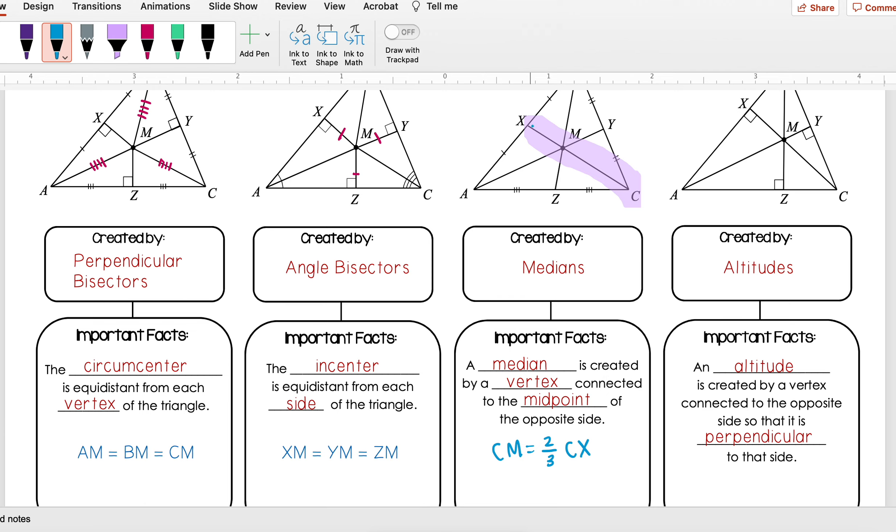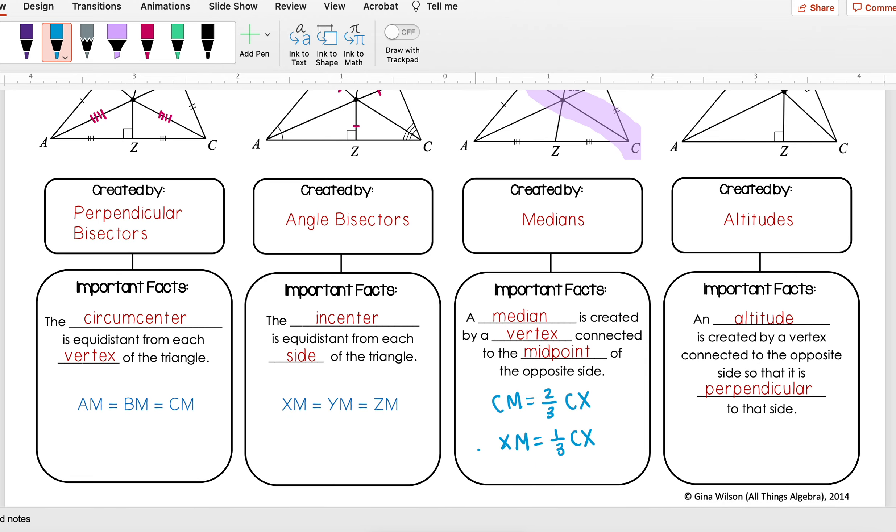I can also look at XM, and I know that XM is going to be a third of the whole segment. And then if I'm comparing XM to MC or CM, I know that CM is twice the length of XM.